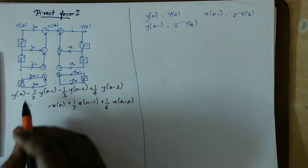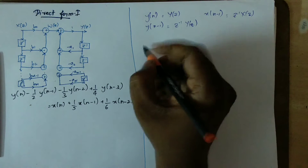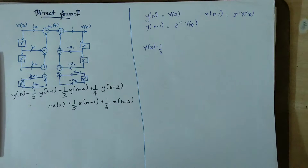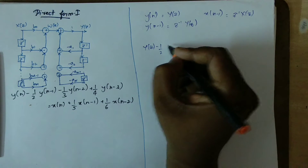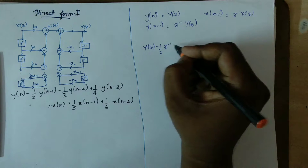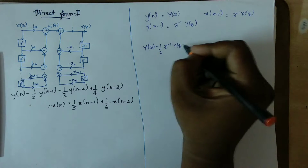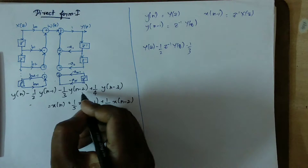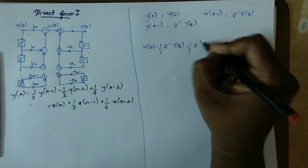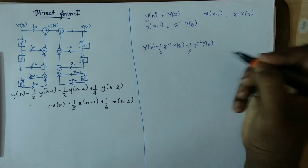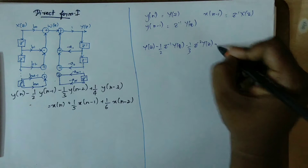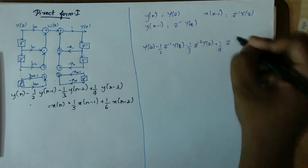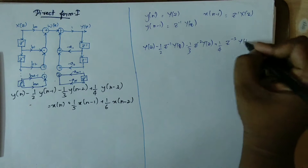Now the question: Y(z) minus half of Y(n-1) — that is, z^(-1) · Y(z) — minus 1/3 of z^(-2) · Y(z), plus 1/4 of z^(-3) · Y(z).